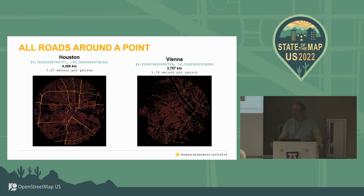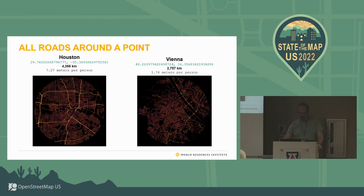Here we get all roads around a point. I have Houston and Vienna at the same 10-kilometer radius. Houston has a lot of roads — about 4,300 kilometers of roads compared to about 2,700 kilometers in the same area in Vienna. And the roads per person, measured in meters per person, are a lot higher in Houston than in Vienna — around 7 versus 1.7.